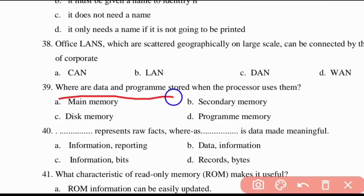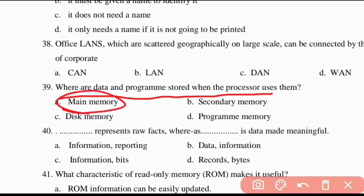Thirty-ninth question: where are data and programs stored when the processor uses them? The answer is main memory.